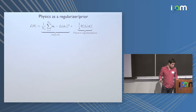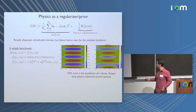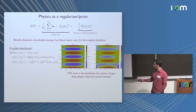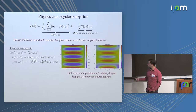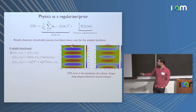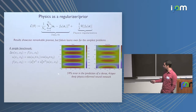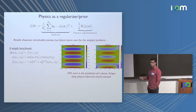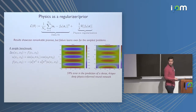Despite some interesting early results, failure looms even for the simplest problems. Take the simple Poisson equation with an exact fabricated solution depending on parameters A1 and A2. For a simple choice of A1 and A2 that introduces some directional anisotropy, you get a solution that looks a certain way. But no matter how much you try and whatever tricks you use with a physics-informed neural network, you're very likely to get a solution with about 59% error in your prediction.